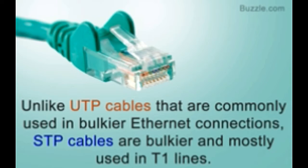Cables having such twisted pairs of wires come in two variants: shielded twisted pair cables and unshielded twisted pair cables. We have looked into both these types of cables in great depth in order to compare them with each other.